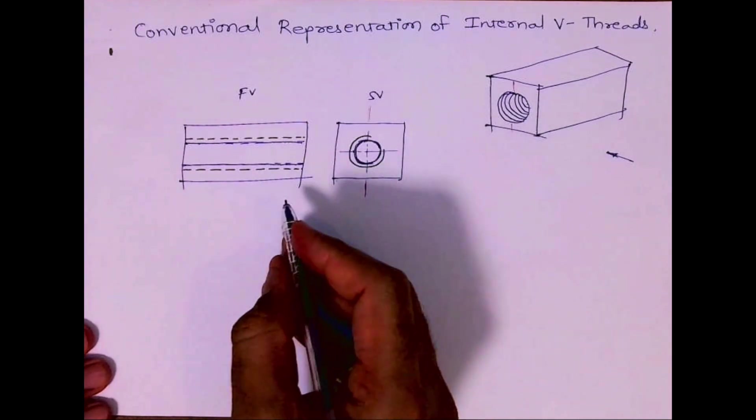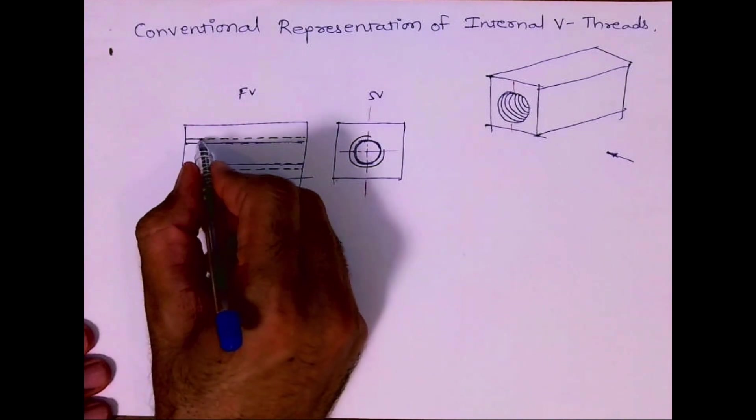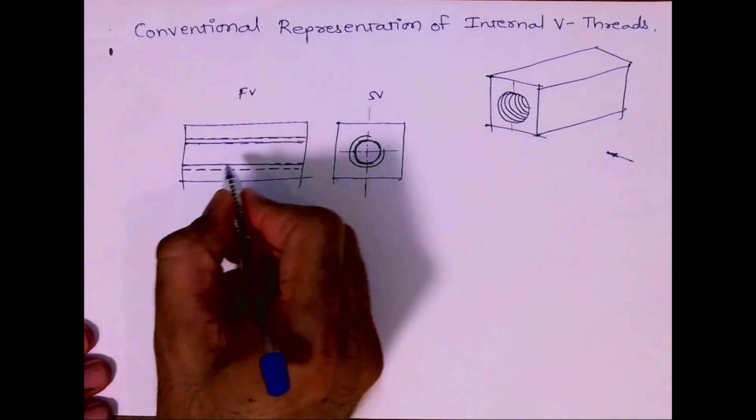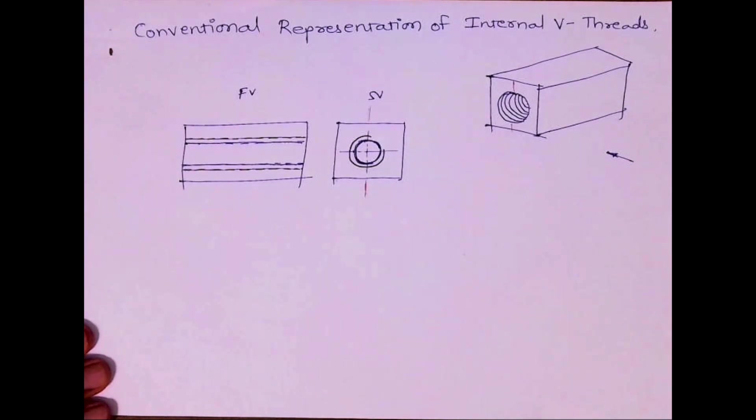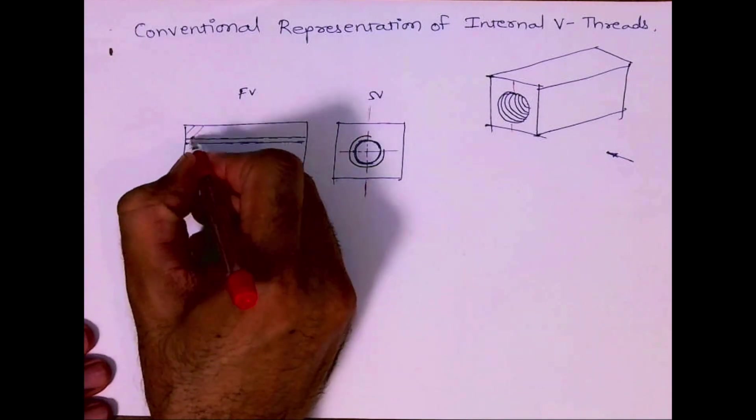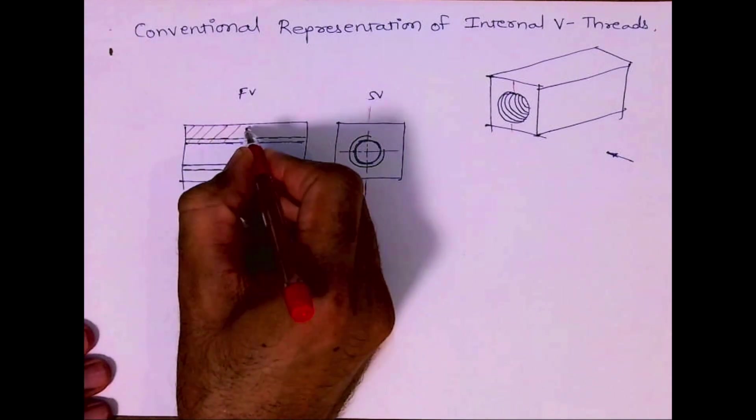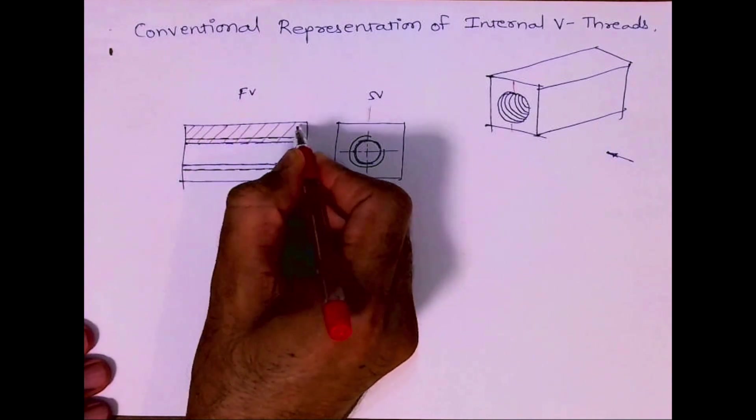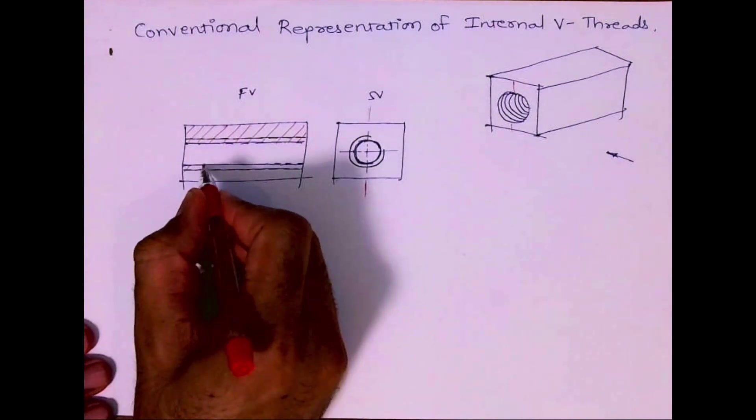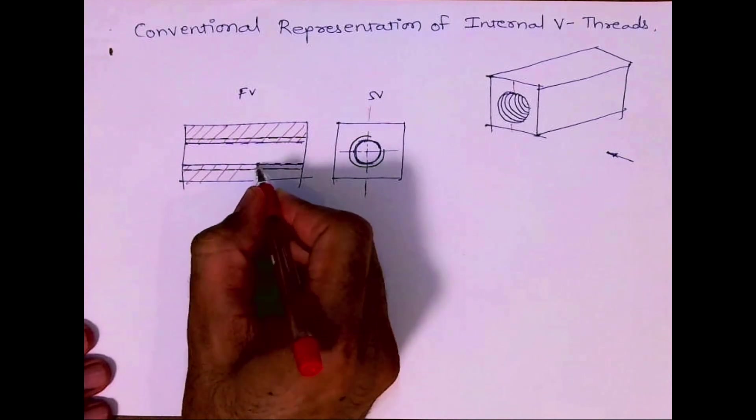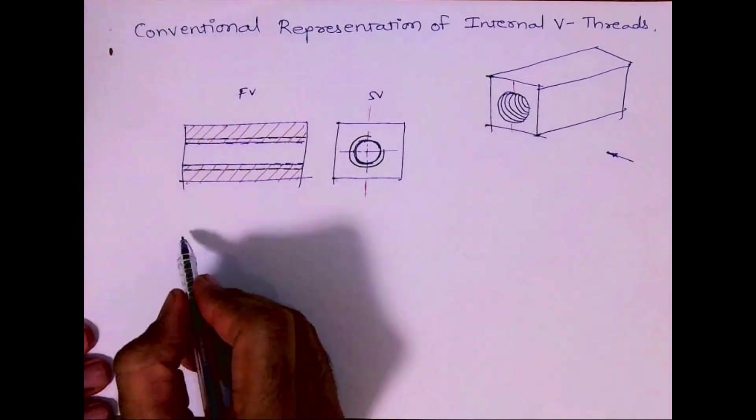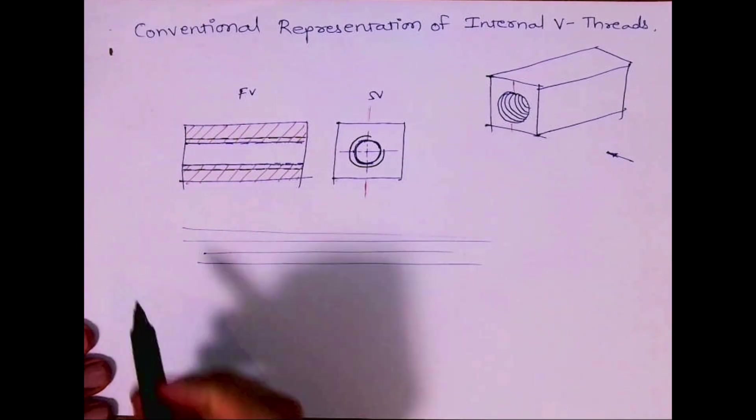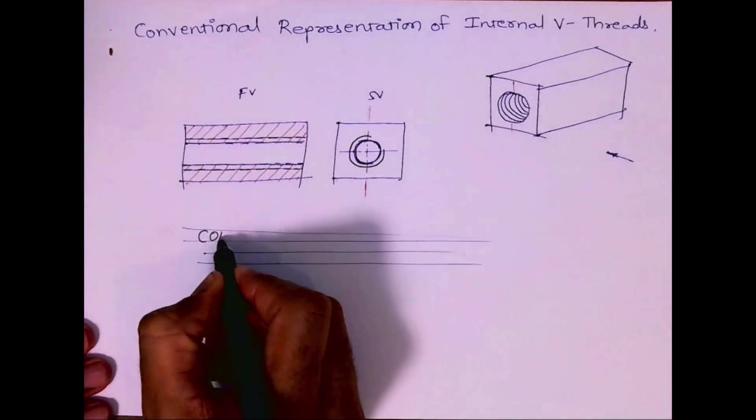See, this is dark and the outer circle will be automatically medium dark. Same applies with the line also. The inner line will be dark, outer one will be medium dark. And then you can do hatching till the inner line. This is how you will generally show V thread. You can write naming and guideline.